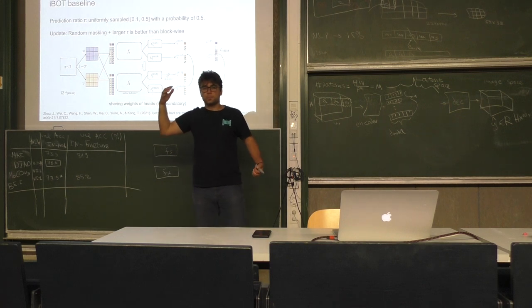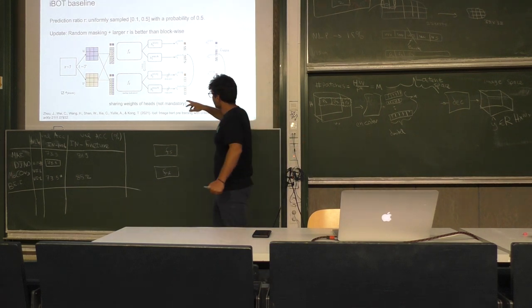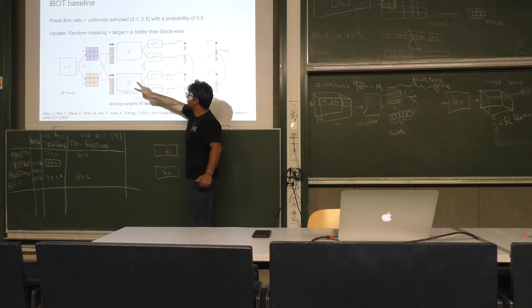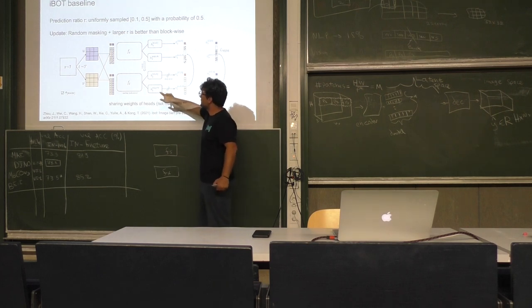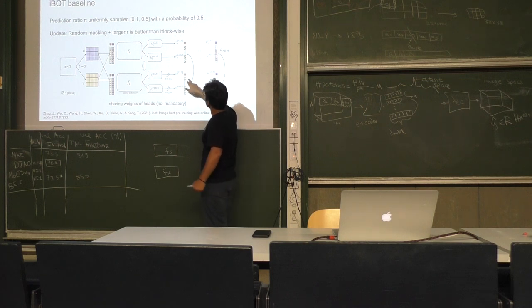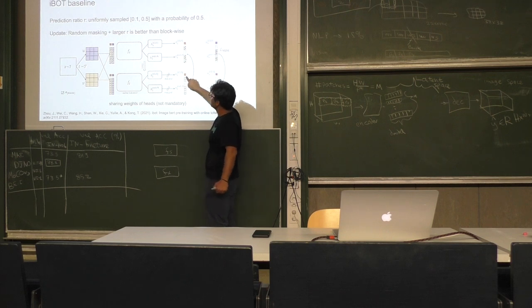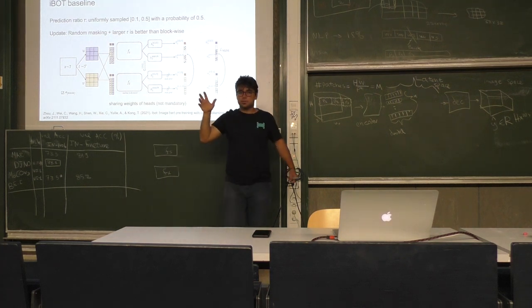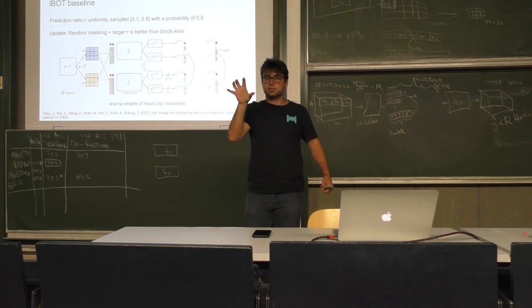Both models have two heads. If you remove this head and this head, the method is reduced to the DINO approach. This head and the loss that corresponds to this head take two views of the same image. We minimize the cross entropy for two different views of the same image.